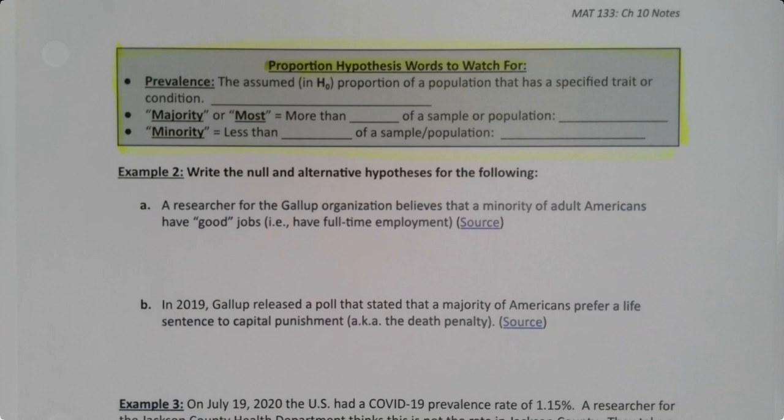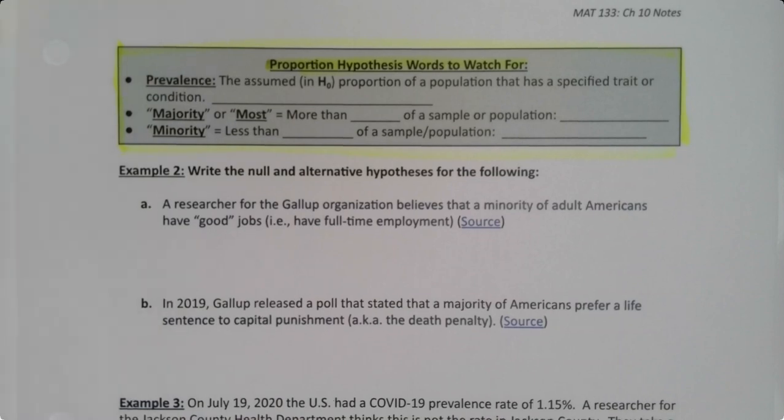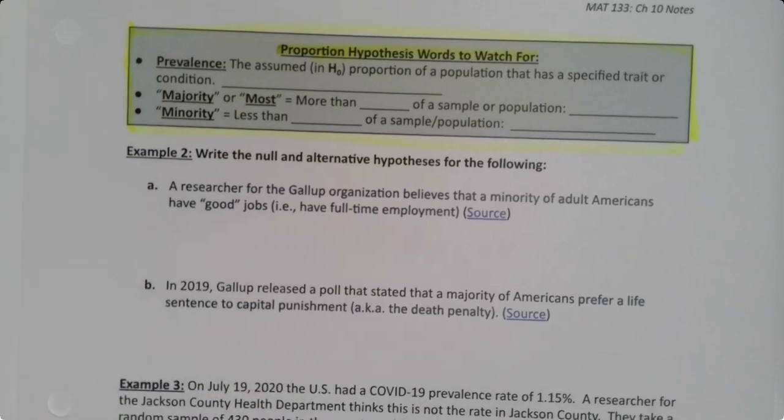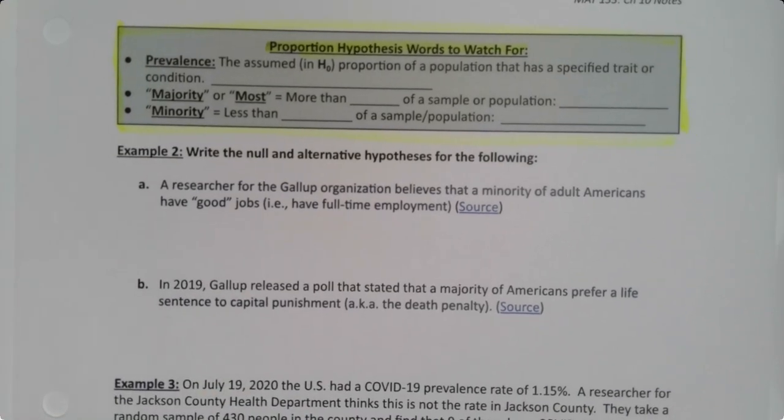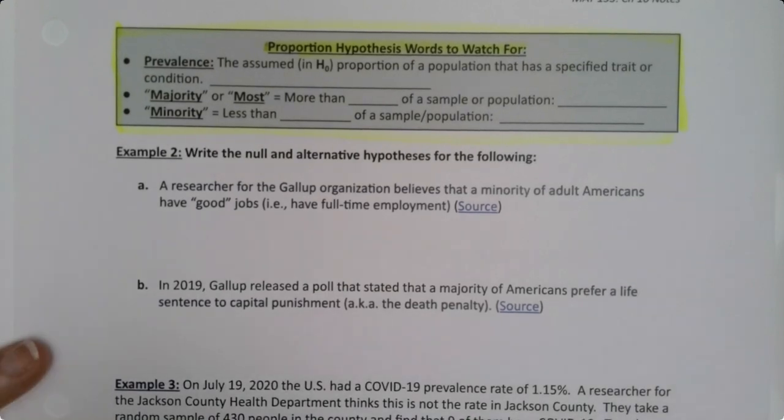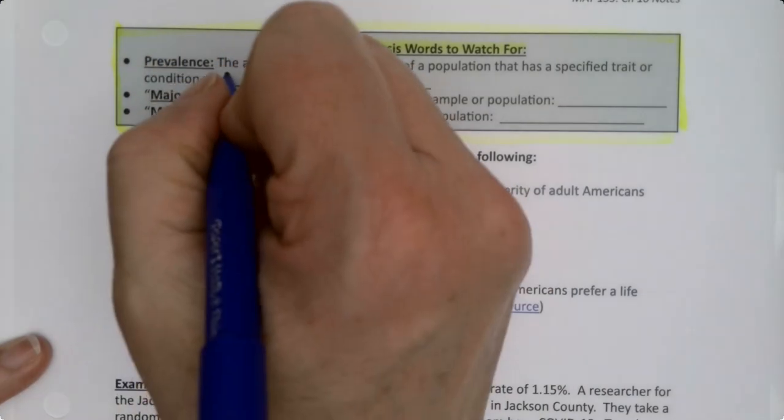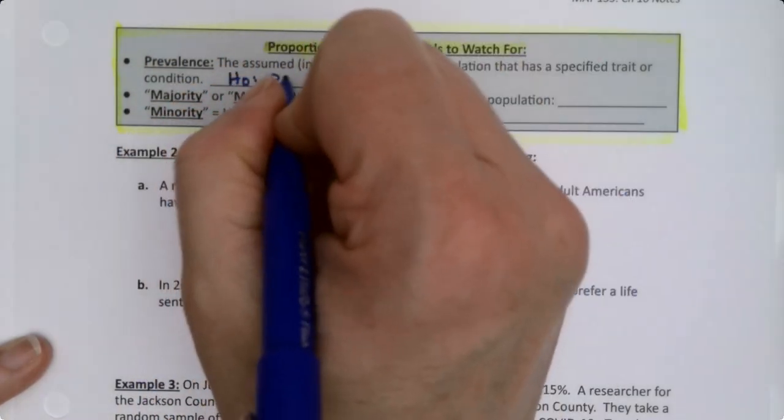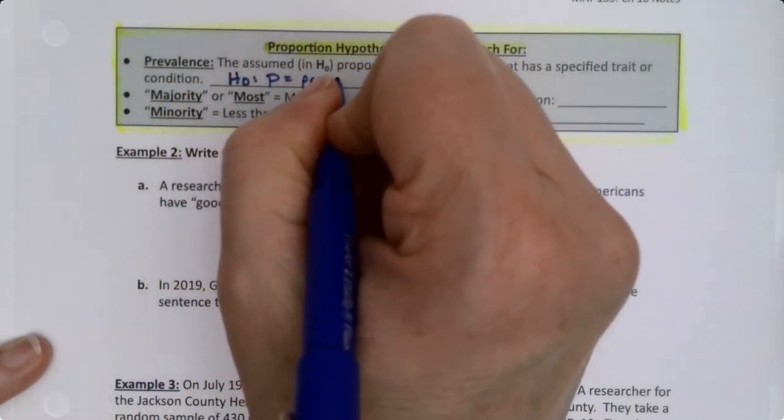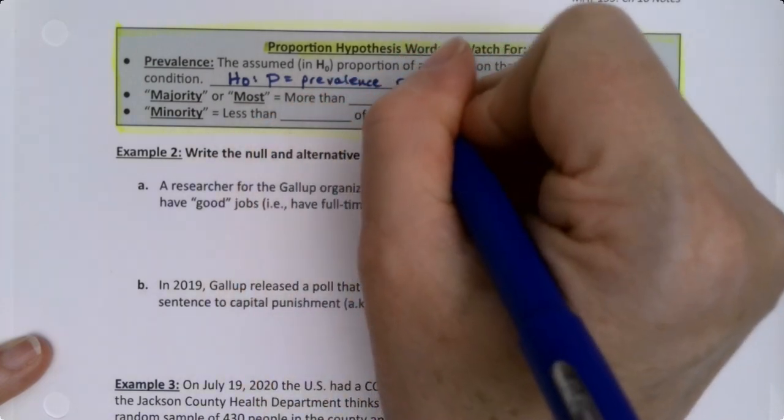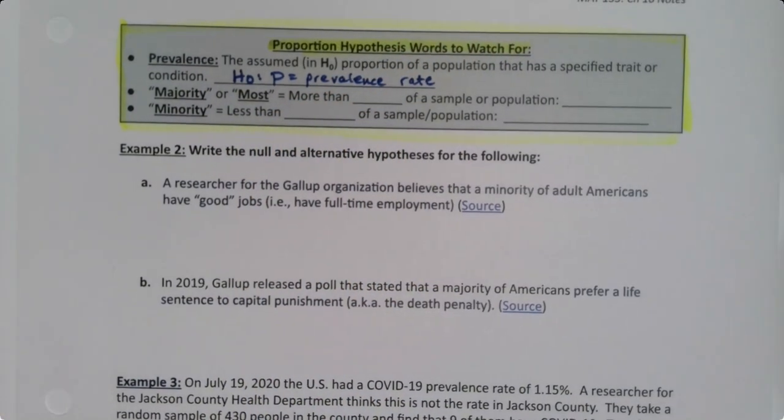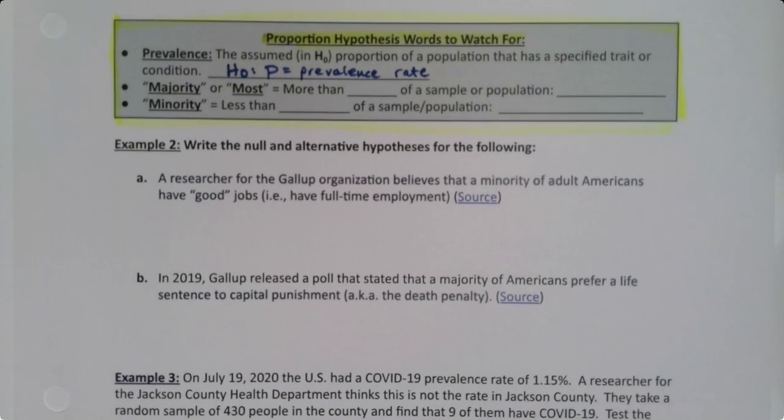The first one is prevalence. A prevalence rate is the standard rate that's assumed to be true in an area. For example, the prevalence of diabetes in America is at 15%. When we do that, we're saying the null hypothesis is whatever that prevalence rate is—you assume it to be true unless you can prove it otherwise. So a prevalence rate is the null hypothesis they're giving you.